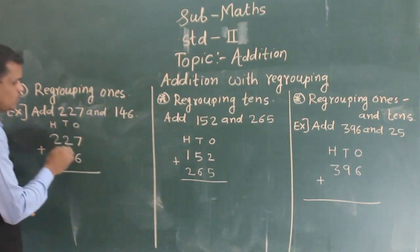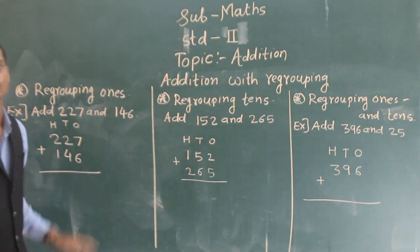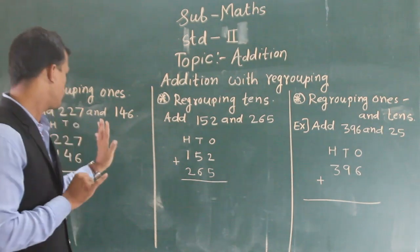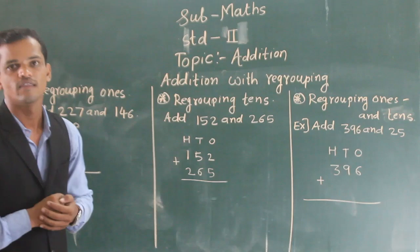So add the ones column, 7 plus 6. So after 7, count forward. So after 7 means 8, 9, 10, 11, 12, and 13. So 7 plus 6, 13.